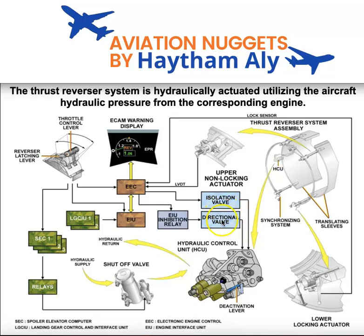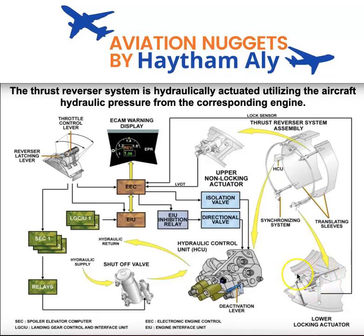The upper actuator is an LVDT non-locking actuator, and the lower actuators are locking actuators — they have a lock sensor and a locking mechanism inside the locking actuator.